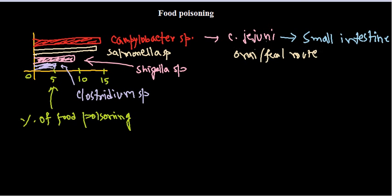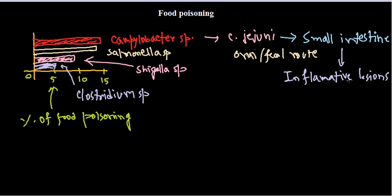Campylobacter jejuni colonizes in the small intestine, specifically in the jejunum and ileum regions, where it causes localized inflammatory reactions. Inside these inflammatory lesions there is colonization of the bacteria. This ultimately leads to symptoms including diarrhea, headache, nausea, vomiting, and abdominal cramps.